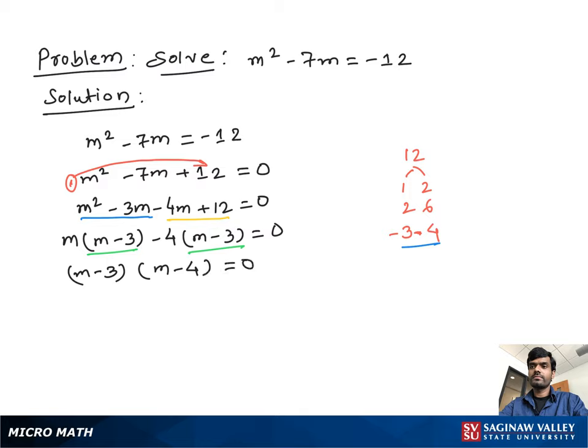Both terms multiply to give us 0, so we set each term equal to 0. We set m minus 3 equal to 0 or m minus 4 equal to 0.